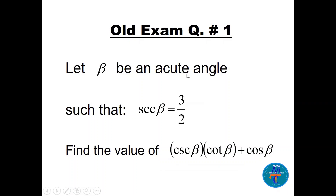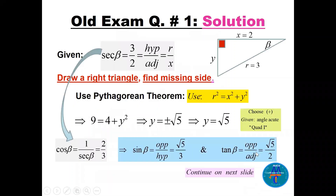Question number one: beta is an acute angle such that secant beta equals 3 over 2. Let's find the value of the expression cosecant beta times cotangent beta plus cosine beta. We can start by building a right triangle. Secant beta — we know that is hypotenuse over adjacent.